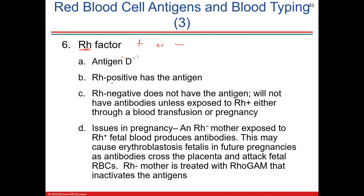If you're Rh negative, you don't have the antibodies. The only way you'll develop antibodies to Rh is if you're exposed to it — unlike A and B. So how could that happen? Let's say the mother is Rh negative and the father is Rh positive. If they have a baby, the fetus has a 50-50 chance of being Rh positive.